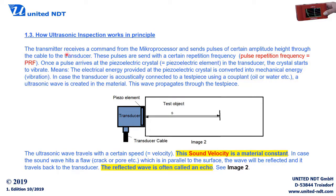The pulse repetition frequency is an important expression to understand. These pulses are sent with a certain repetition frequency. Once a pulse arrives at the piezoelectric element in the transducer, the crystal starts to vibrate — the electrical energy is converted into mechanical energy, into vibration. In case the transducer is acoustically connected to a test piece using a couplant — such as oil or water — an ultrasonic wave is then created in the material, and this wave propagates through the test piece.